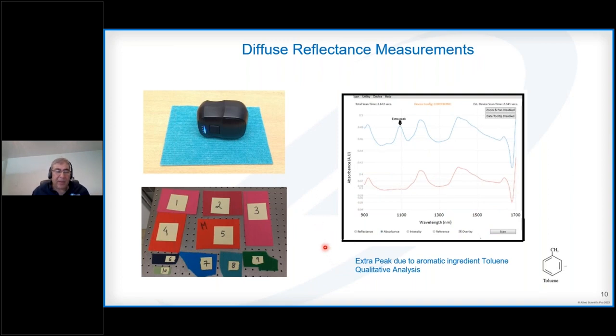Here are some typical applications. This was a case study with several samples of fabric. The contact sent these fabrics and said one of them has an extra element, so see if you can detect that with the NervaScan. We did the scanning, and it turned out that sample number seven had an extra peak here at around 1100 nanometers. You can qualitatively analyze these spectra without doing any deep chemometrics analysis. It turns out this extra peak is due to an aromatic ingredient, toluene. Qualitative analysis is also possible.